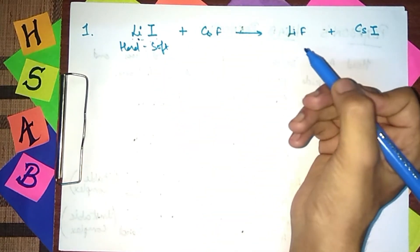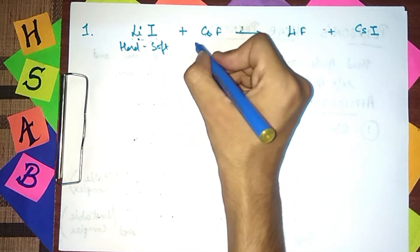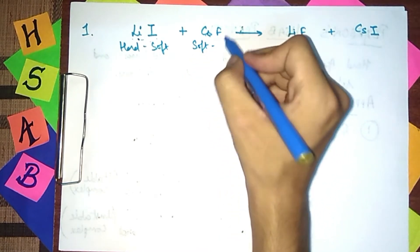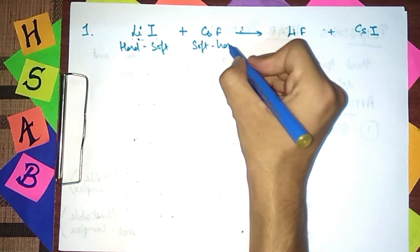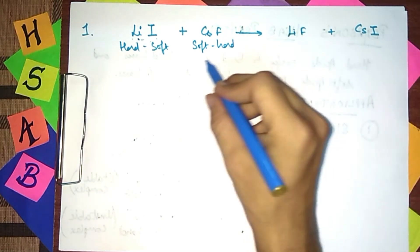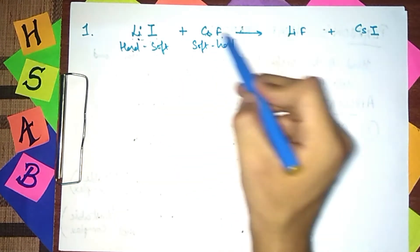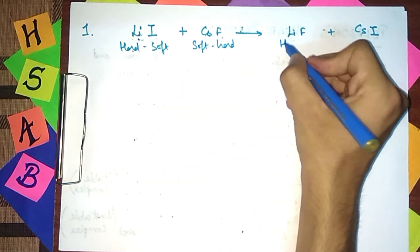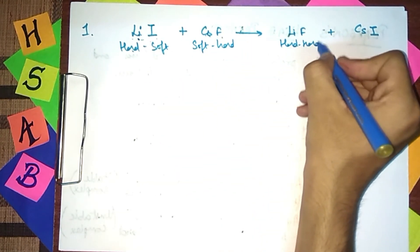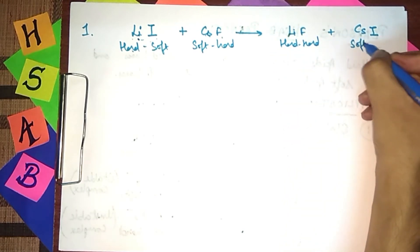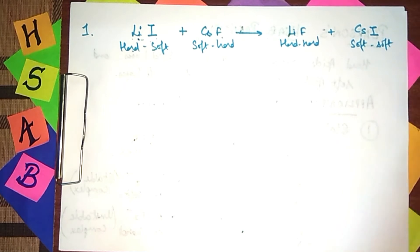Cesium (Cs) here is a soft acid because of its large size, and fluoride is a hard ion because it is more electronegative. So here, lithium fluoride gives us a hard-hard combination. Hard and hard combine — this means this reaction is feasible. Look how easy it is to solve this question.